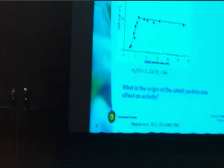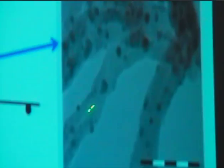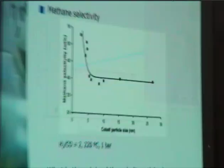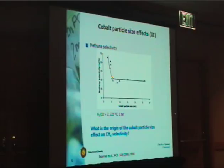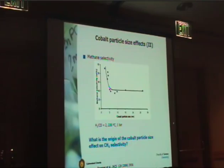Not only activity is influenced, but also selectivity. Here you see the methane selectivity — the selectivity towards the undesired product — as a function of cobalt particle size. For particle sizes below 6 nanometers, there's an increase in the amount of undesired methane product. So we can ask ourselves: what is the origin of the cobalt particle size effect on C1 selectivity?